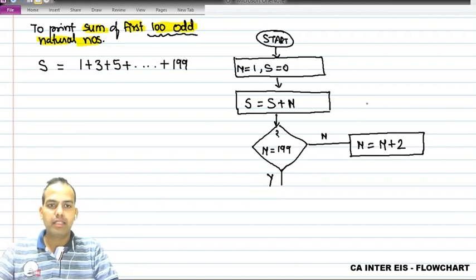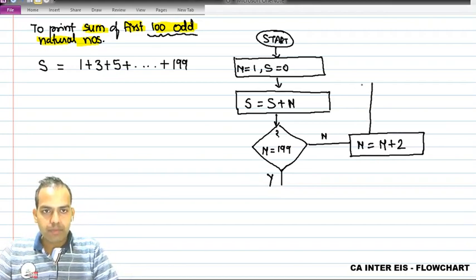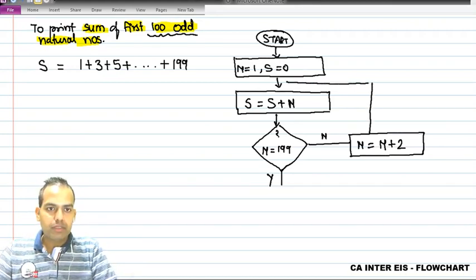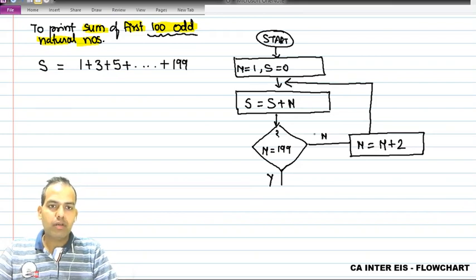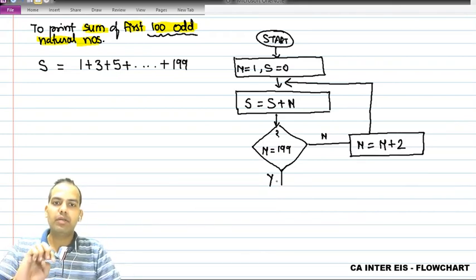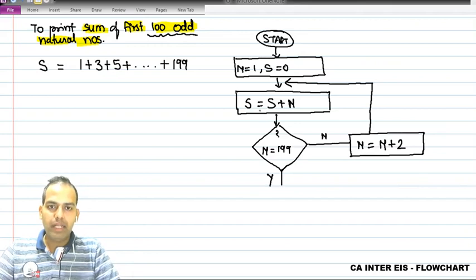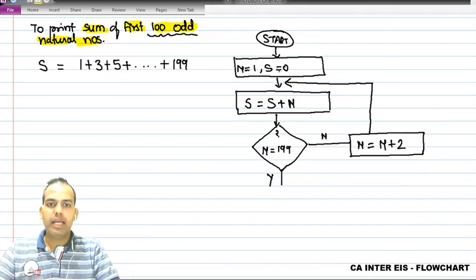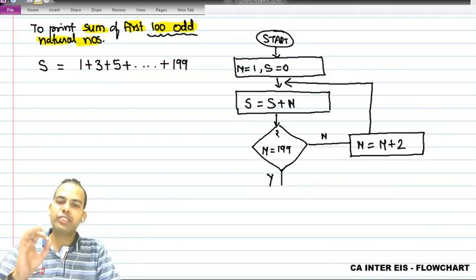So this will go up and it should touch here. So this loop - this is called loop - will get created for 199 times. That means first 100 numbers will be stored in s. s is equal to s plus n, and s value initially, s value will be 0 plus 1. That is first time it will take 1.